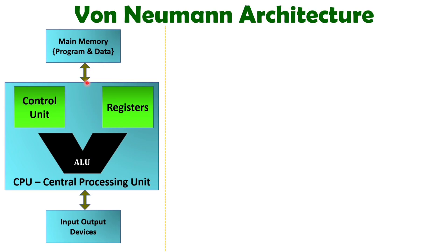At the same time, you cannot have program execution as well as data access simultaneously. Either you have program instructions on the system bus, or you have data access — because we have common buses to access this main memory. So Von Neumann architecture has main memory which holds both program and data in the same memory.